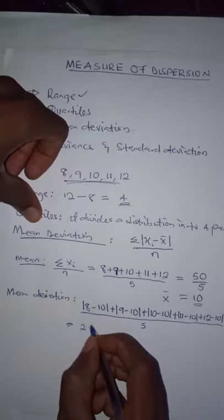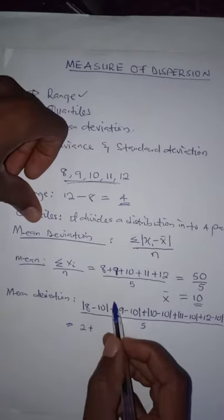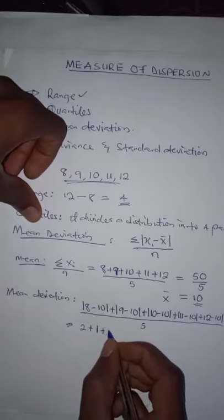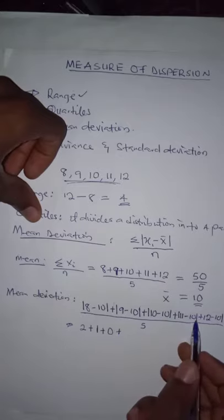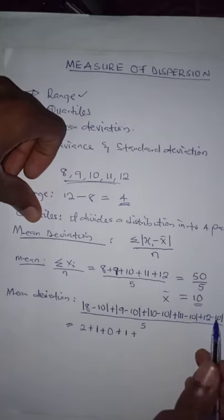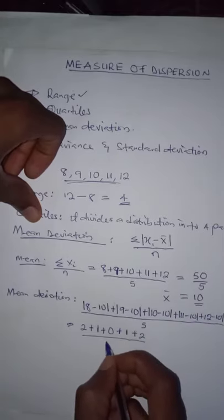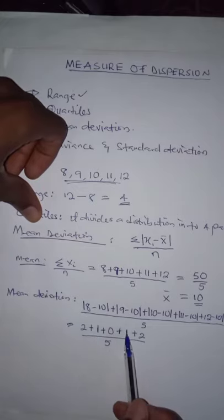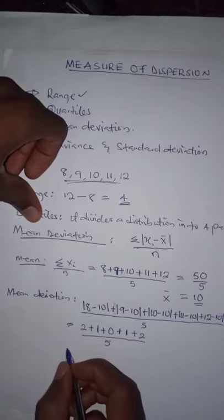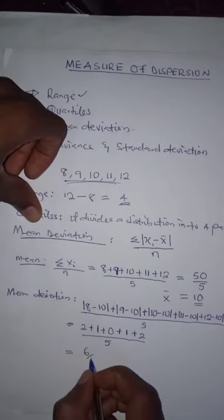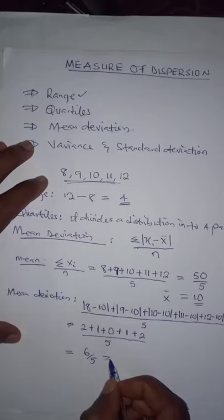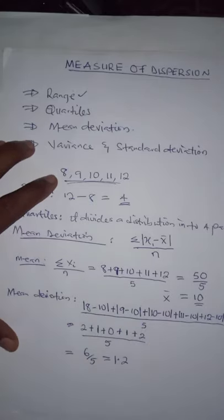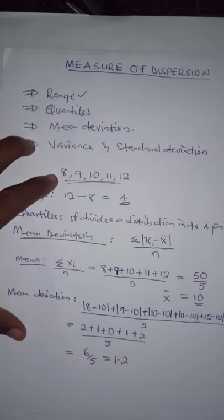Continuing: 10 minus 10 is 0, plus 11 minus 10 is 1, plus 12 minus 10 is 2. So we have 2 plus 1 plus 0 plus 1 plus 2, which gives 6. We have 6 over 5, which is equal to 1.2. So the mean deviation of this set of data is 1.2.